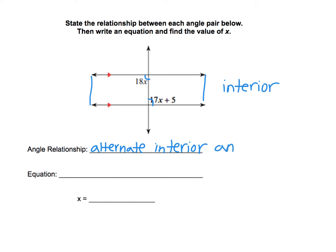And we know that alternate interior angles are congruent. So because they're congruent, that means their measures are the same. So the equation that we're going to solve is we're just going to set those two things equal to each other. So 18x equals 17x plus 5.